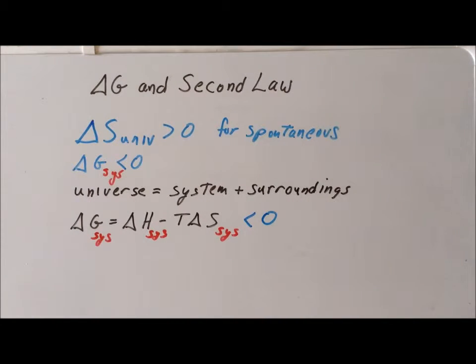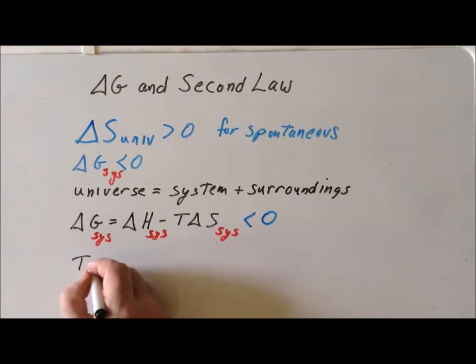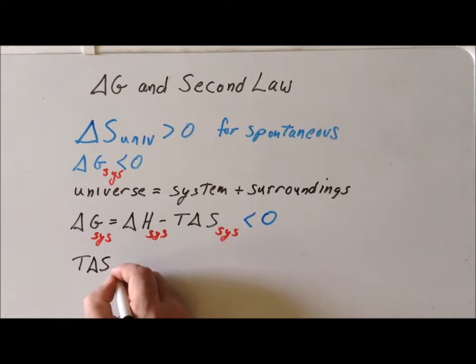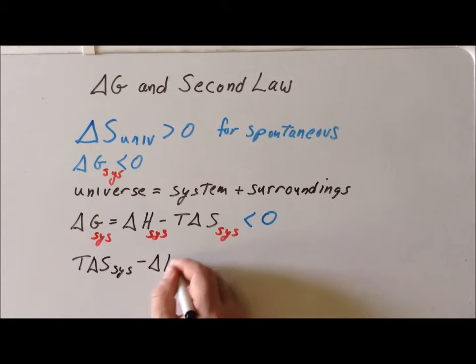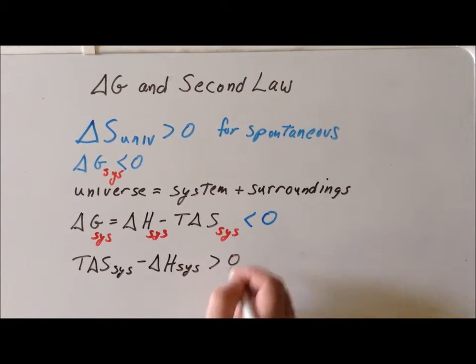So what do we do first? Our first step might be a surprising one, and we want to multiply both sides of the inequality by minus one. What does that give us? Well, it's going to give us that T delta S of the system minus delta H of the system is greater than zero. And we combine two tricky steps into one at this particular part. So this is one of the most tricky of all the steps in our derivation.